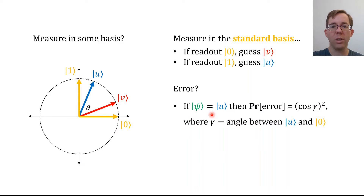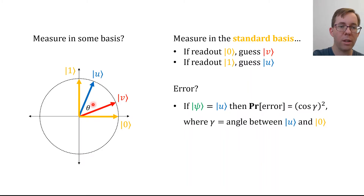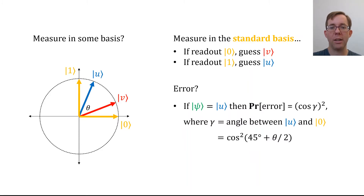Suppose psi equals u. We make an error when we guess v, which happens when the readout is zero. So the probability of error is the probability of reading out zero, which is the cosine squared of the angle between u and zero. The angle between u and zero is not theta — that's the angle between u and v. The angle between u and zero is some gamma, which equals 45 degrees plus half of theta. So the error probability is cosine squared of (45 + θ/2), which equals one-half minus one-half times sine theta.